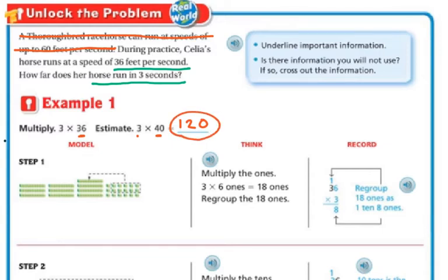So step 1, we are going to model. So we're thinking about this. We have 3 tens, and then we have 3 tens times 36. So I'm doing 3 times 36. So if I look here, I've got 10, 20, 30.